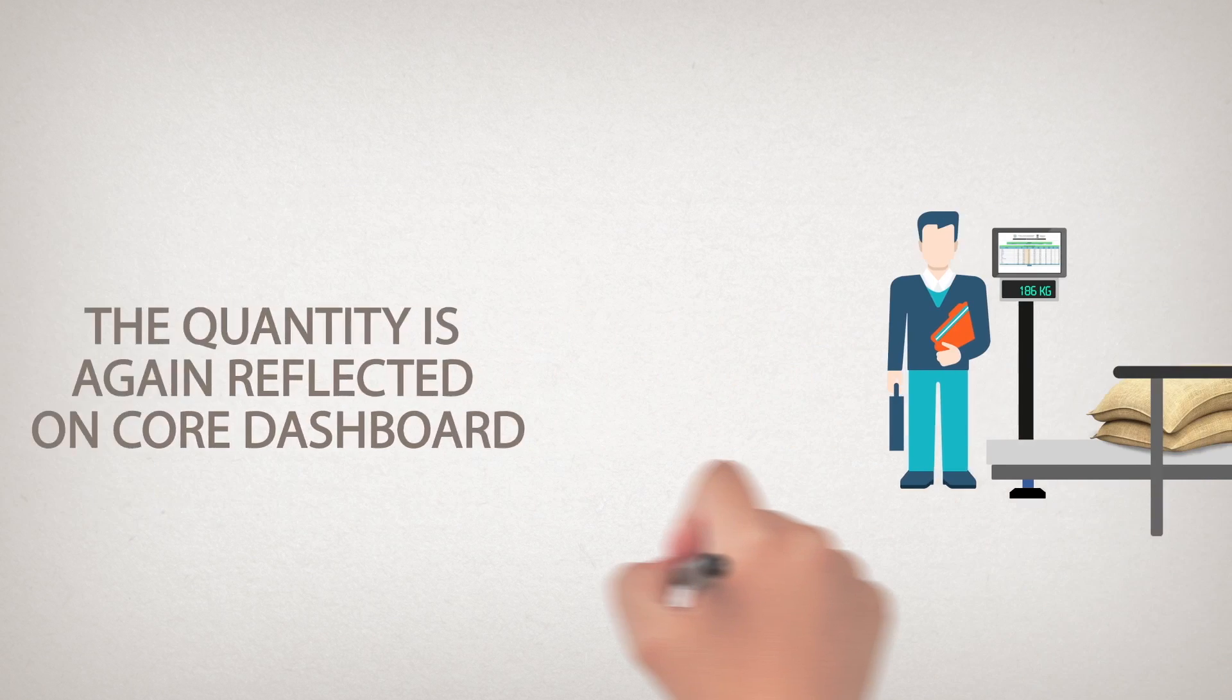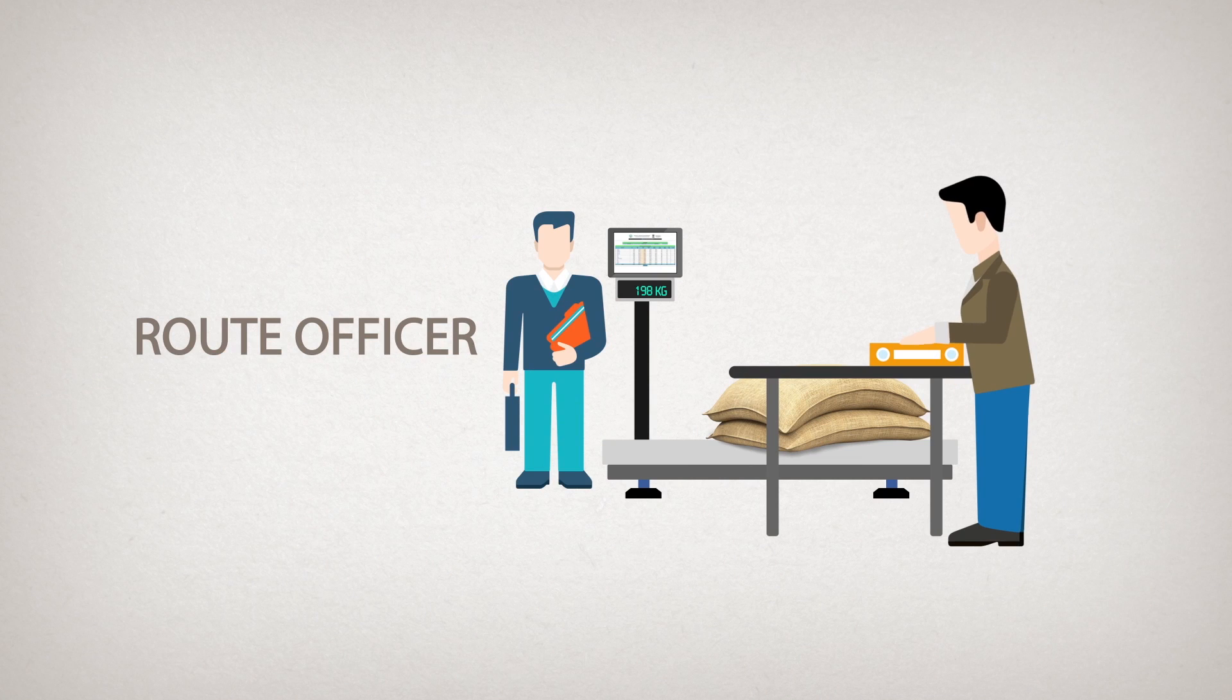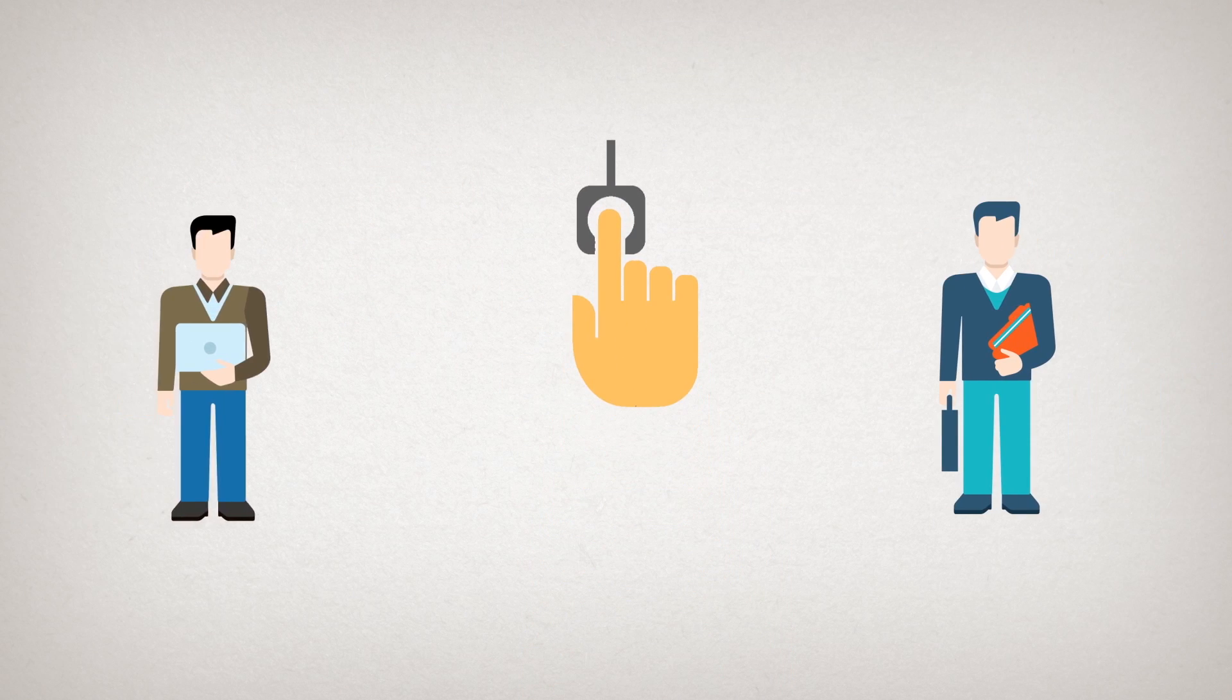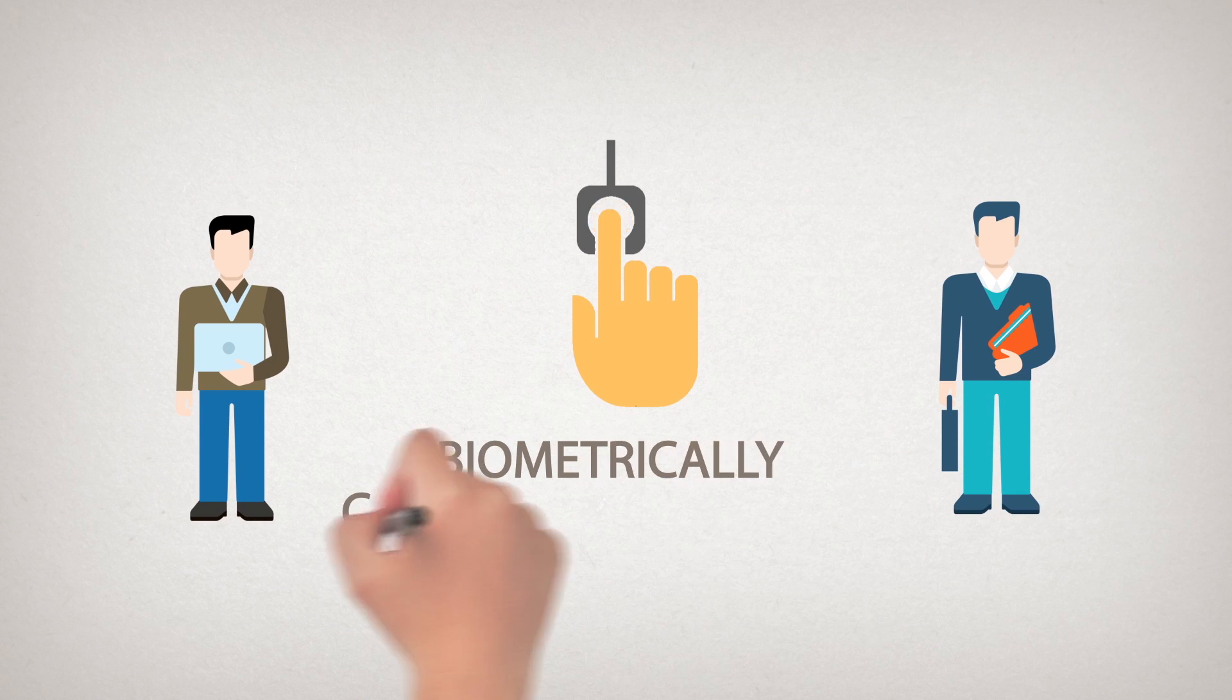A government official, known as Root Officer, is present at the fair-price shop to monitor the transfer. Once the transaction is complete, the Root Officer and the shop owner biometrically confirm the transfer.